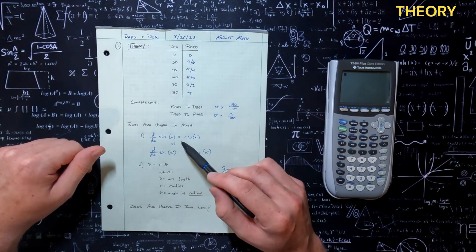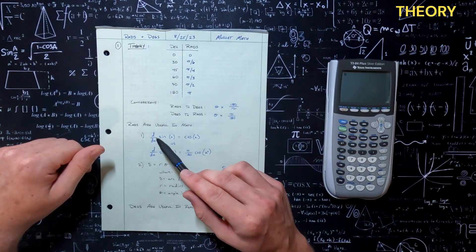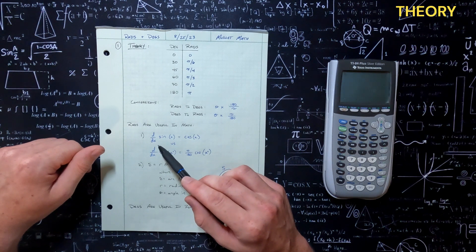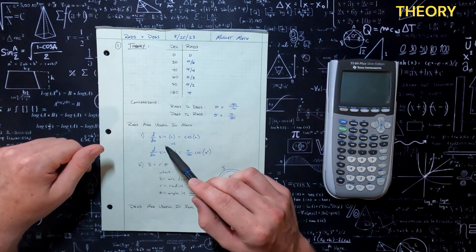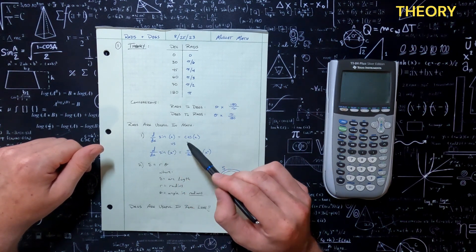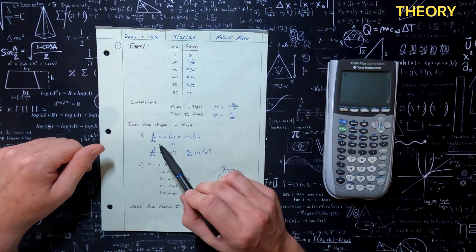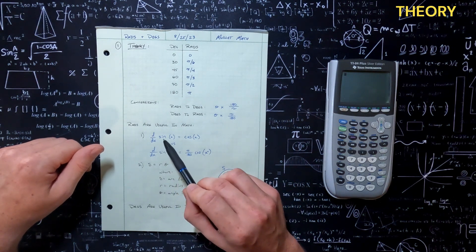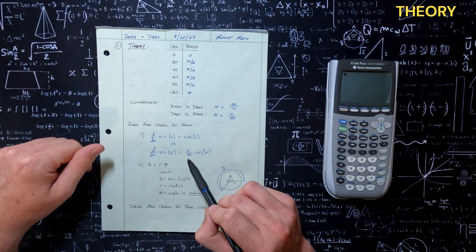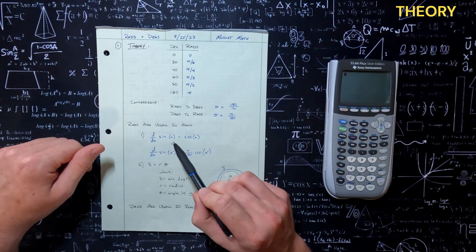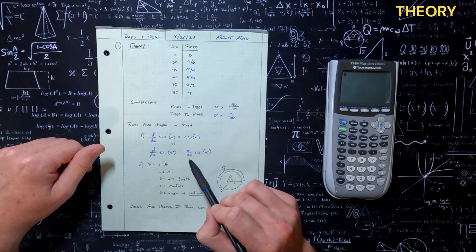If you guys go to Calc 1, in the first couple of weeks you're going to start doing derivatives. And when we start doing derivatives and we have sine and cosine functions, you're going to take the derivative of a sine function and get a cosine function out — that's just the derivative of sine.